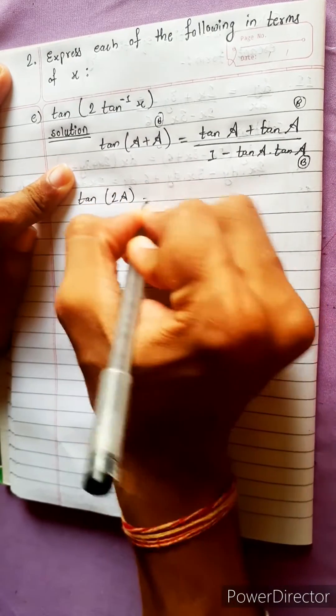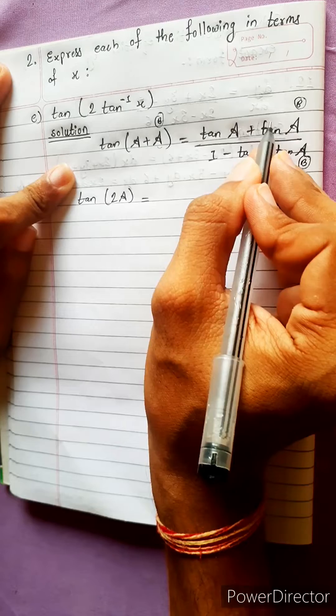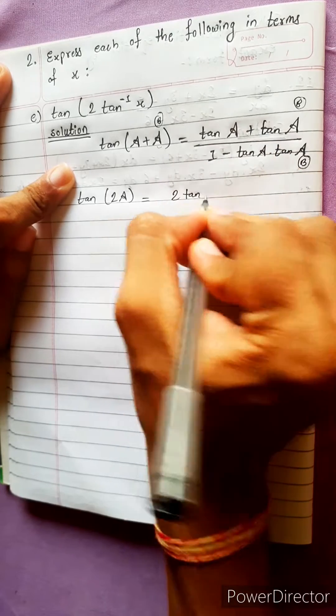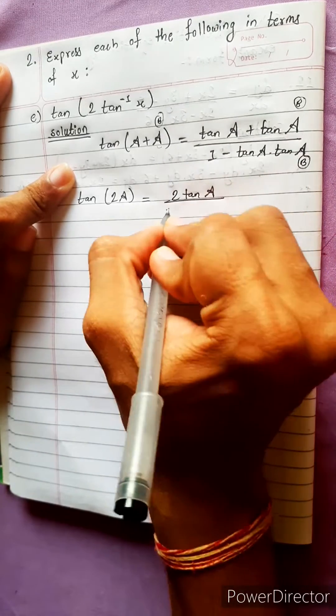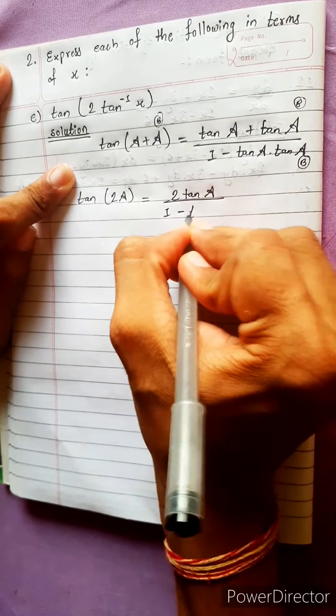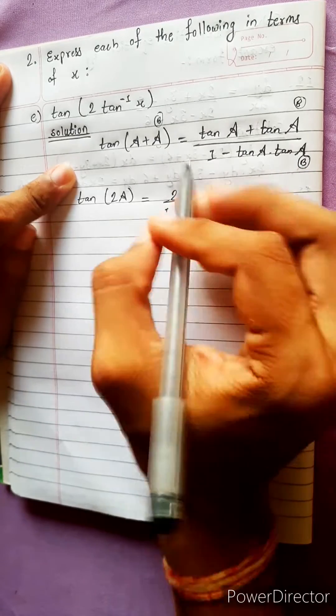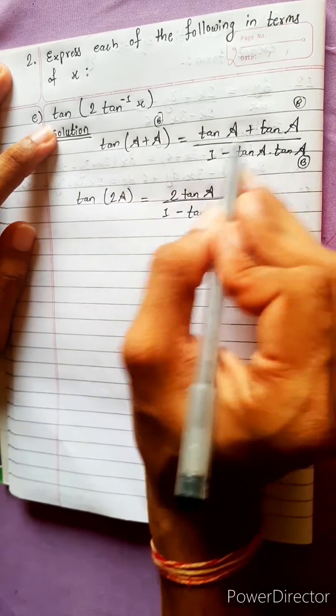tan 2A equals, this will be 2 tan A, tan A plus tan A, 2 tan A divided by 1 minus tan A into tan A, tan square A. Do you remember this formula? tan A plus B formula we have written here.